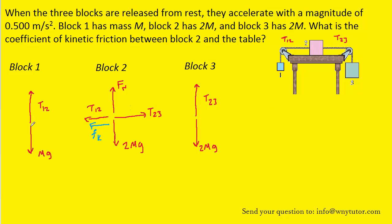Block one has two forces acting on it: the downward gravitational force that we've labeled mg, and the upward force exerted by the rope, labeled T12.